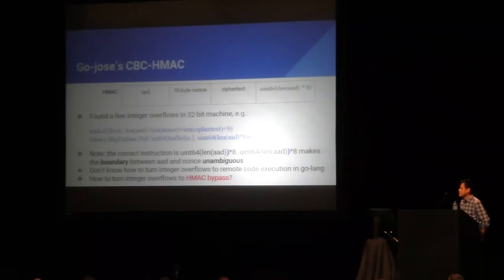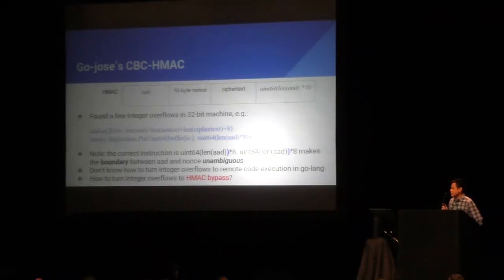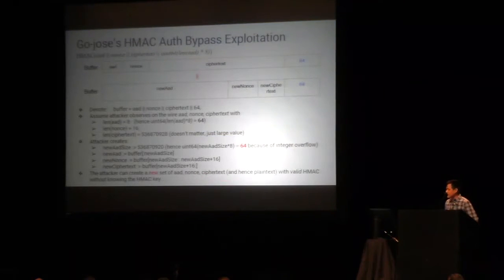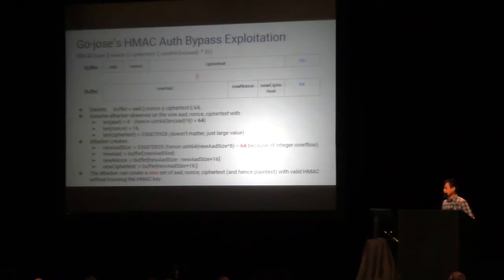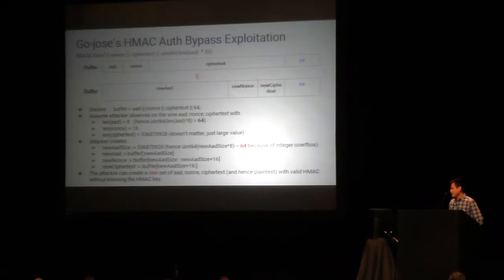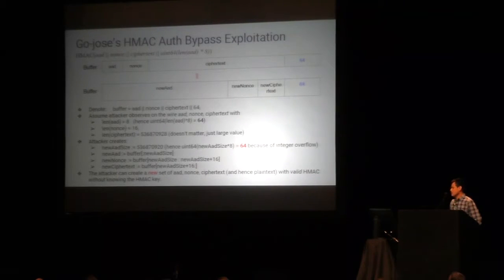GoJose also has CBC-HMAC. The HMAC is computed over the AAD, nonce, and ciphertext. Pay attention to the last component — it actually makes the boundary between AAD and nonce unambiguous. I found a few integer overflows, and I wanted to exploit them. I don't know how to turn an integer overflow in Go into remote code execution, but how about HMAC bypass? The idea is to shift the boundary between AAD and nonce. Assuming an attacker observes some 16-byte AAD, a nonce, and a large ciphertext — the attacker creates a new set of AAD where, because the AAD size is too big, when you multiply by eight it wraps to 64 due to integer overflow. Basically, the attacker creates a new AAD, new nonce, new ciphertext, and the HMAC is the same — causing HMAC authentication bypass.